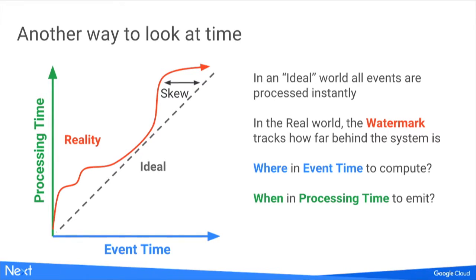If we know everything about our sources perfectly, the watermark is a hard guarantee that we'll never see anything beyond this delay. In many cases our knowledge is imperfect, so the watermark is a heuristic — to the best of the system's knowledge — of when we don't expect to see any new data. Either way, the watermark tells us when we expect to have all the data for a given window, and therefore when it is correct to emit the results.